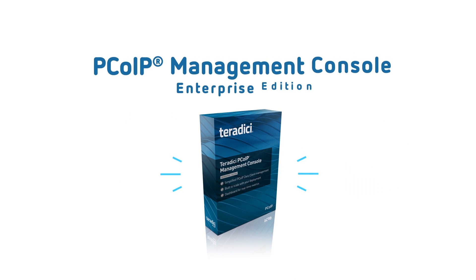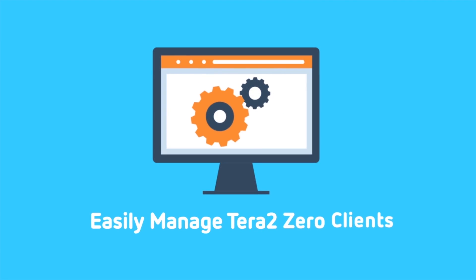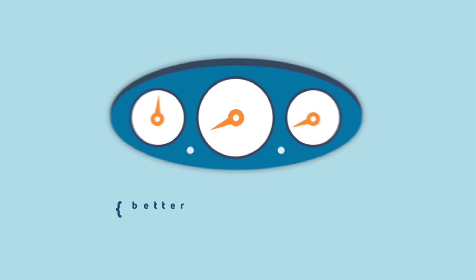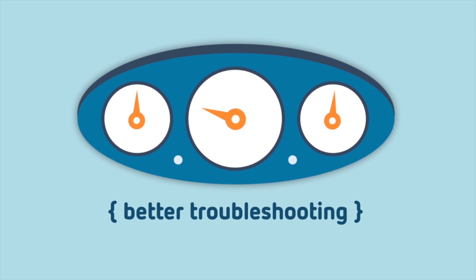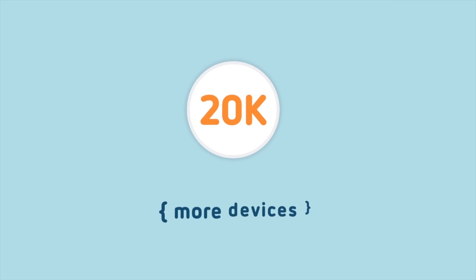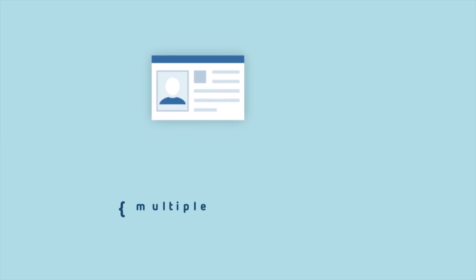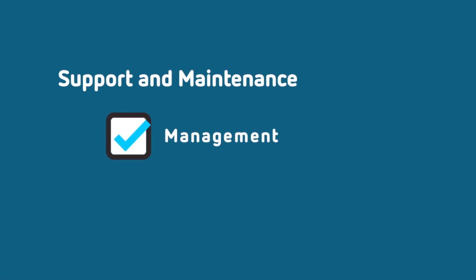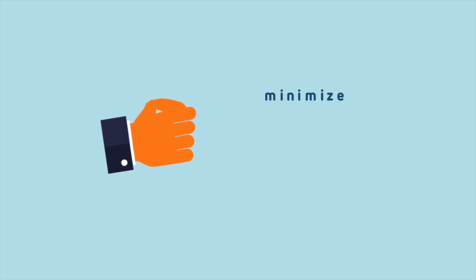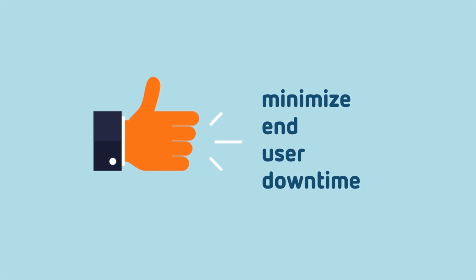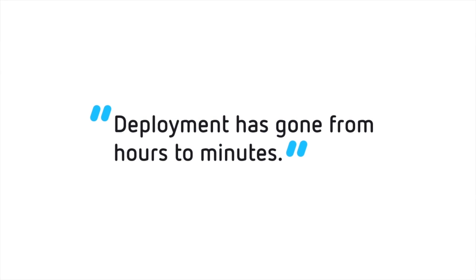PCOIP Management Console now allows you to easily manage Tera 2.0 clients individually or in groups to maintain consistency across devices. Our user-friendly dashboard provides the status of all your devices at any time. You can manage up to 20,000 Xero clients and give multiple administrators simultaneous access. It also includes support and maintenance for both the Management Console and Tera 2.0 client firmware. Plus, you minimize end-user downtime by configuring new devices quickly and efficiently.